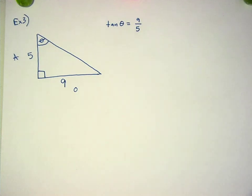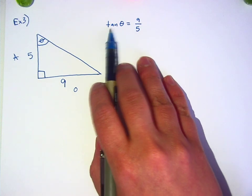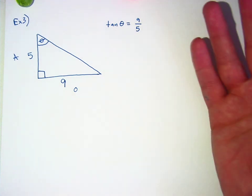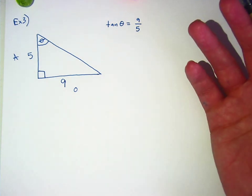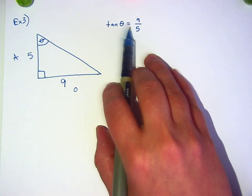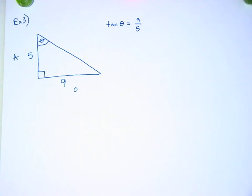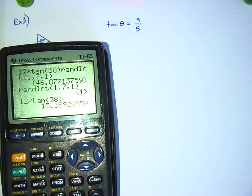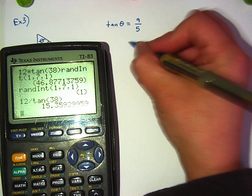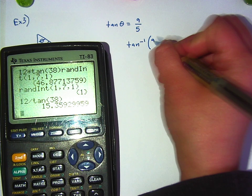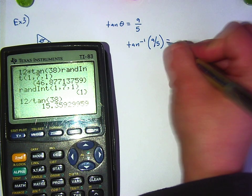And you can't cross-multiply this, right? Because this is not, this right here, look up, this is not tangent times theta. This is the tangent of the angle theta. It's part of it. Okay? It's not the word tangent times the number theta. It's the tangent of whatever the angle theta is. So to figure this out, you do an inverse tangent. You do an inverse every time you're trying to find an angle. So I'm going to do an inverse tangent of 9 fifths, and that will tell me what theta is.